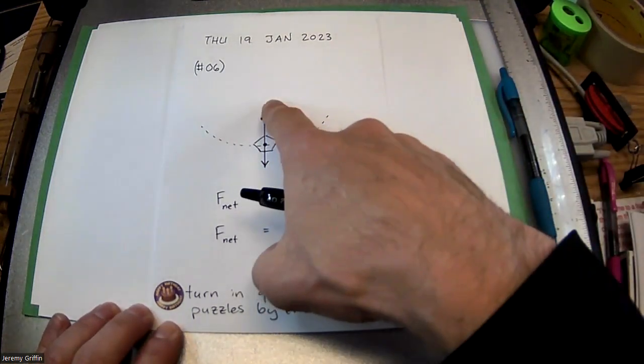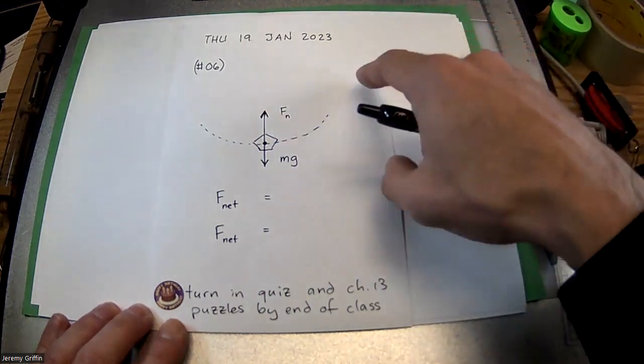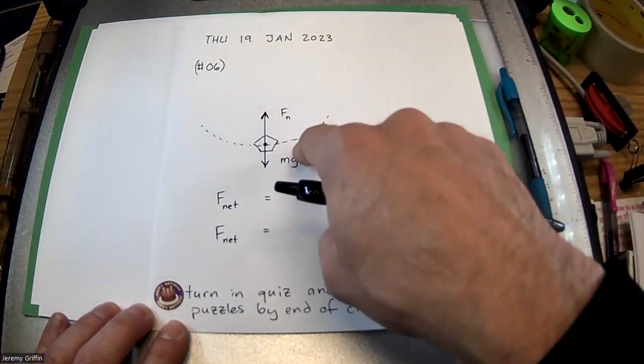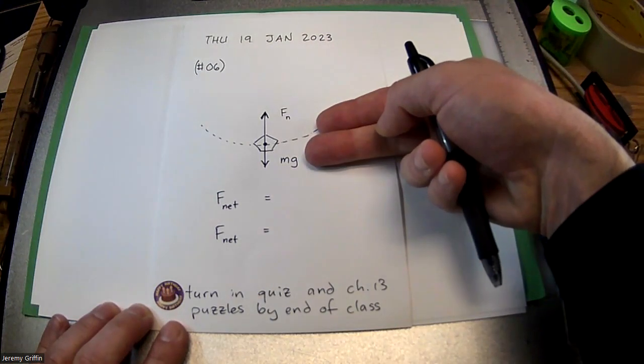The normal force pushing up is more than your weight pulling down. So that's going to hold you in a circle, like a vertical circle. So this could be the free body diagram.